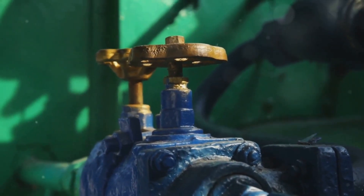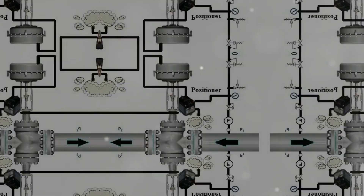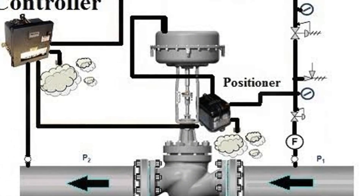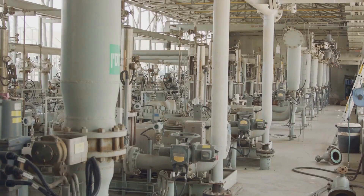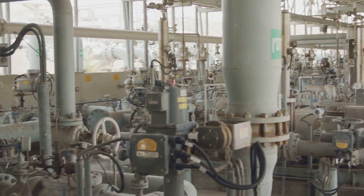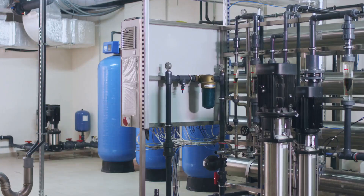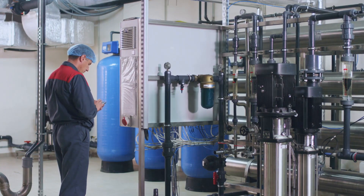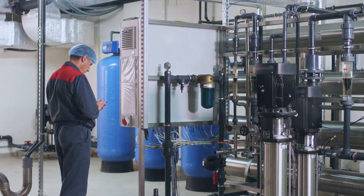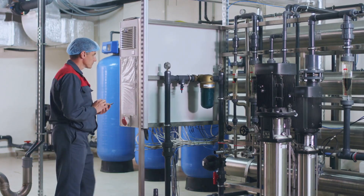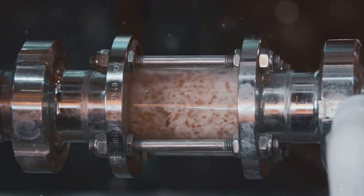Welcome John. Let's start with the basics — could you please explain what a control valve is and its primary function? In the world of fluid dynamics, control valves are the unsung heroes. These mechanical devices are central to the regulation of fluid flow, be it gas or liquid, in various systems. The primary function of a control valve is to maintain control over specific process parameters such as the rate, pressure, or temperature of the fluid within a process.